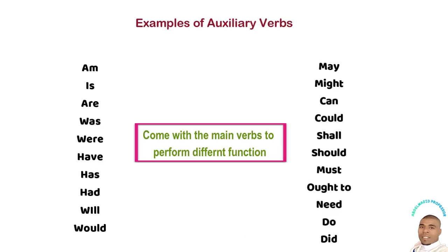Here is a list of auxiliary verbs that you can use along with your main verb to perform different functions. The auxiliary verbs include: am, are, was, were, have, has, had, will, would, may, might, can, could, shall, should, must, have to, and need. All of these are auxiliary verbs.